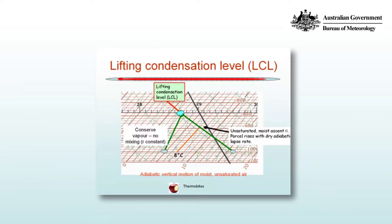Likewise, for this process a parcel conserves vapour. Under parcel theory, we assume that there is no mixing between the parcel and the environment, and so the mixing ratio is constant. Here we start with a dew point temperature of 5°C at 1000 hPa and lift along the isopleth, which is of order 5.3 g/kg or thereabouts.